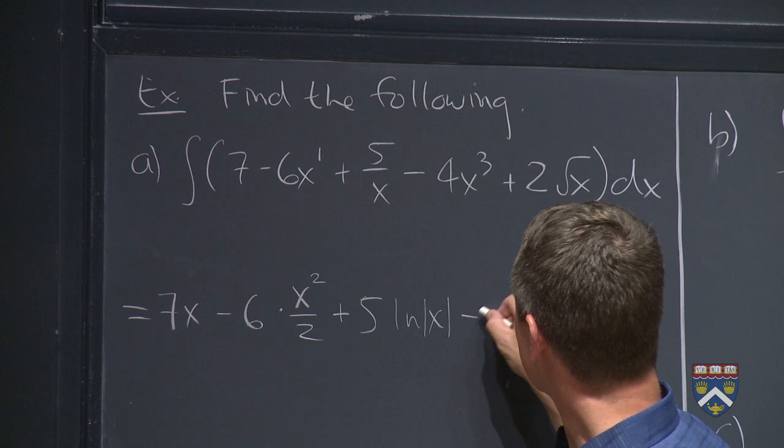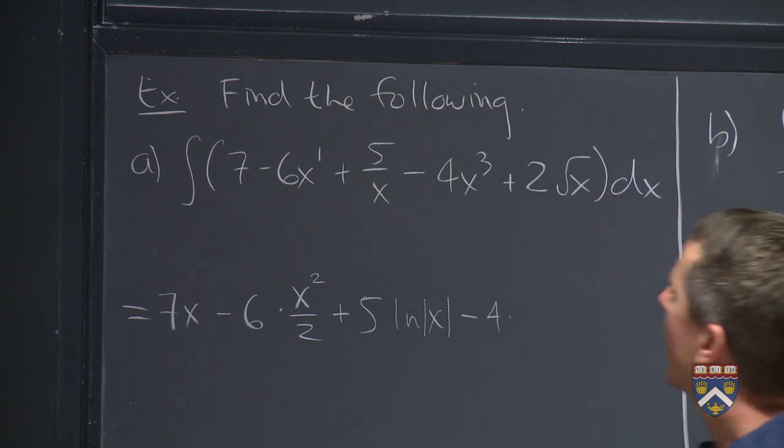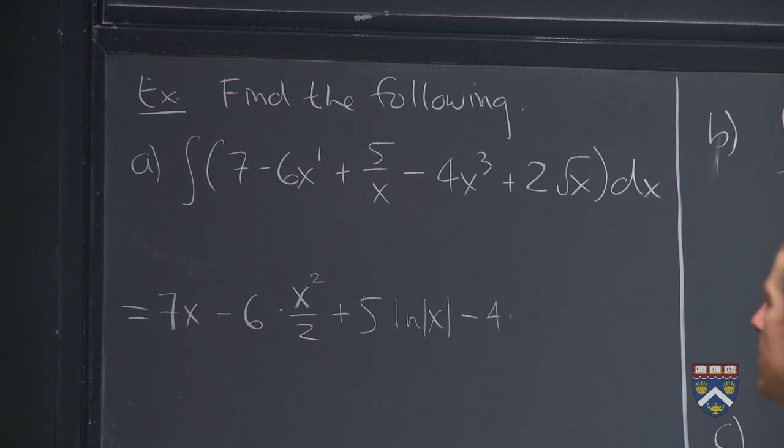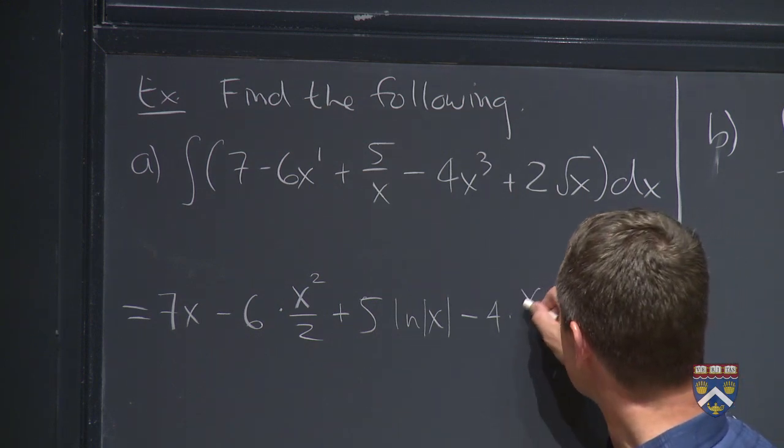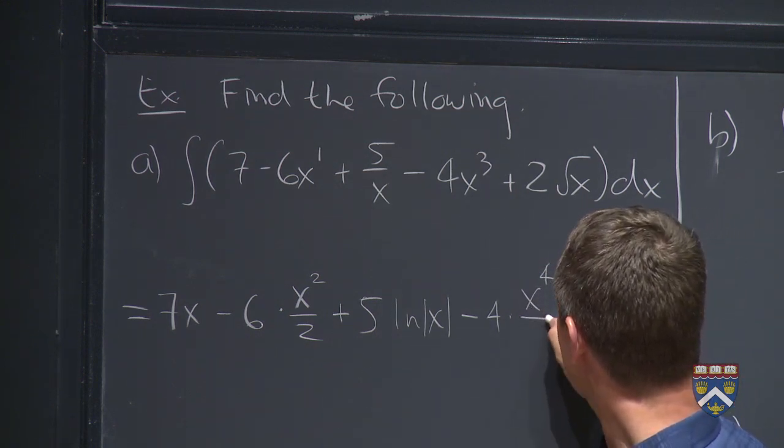How about this? The minus 4 is a constant. And then we have to find an antiderivative of x cubed. So again, we use our power rule. That must have started off its life as x to the fourth over 4.